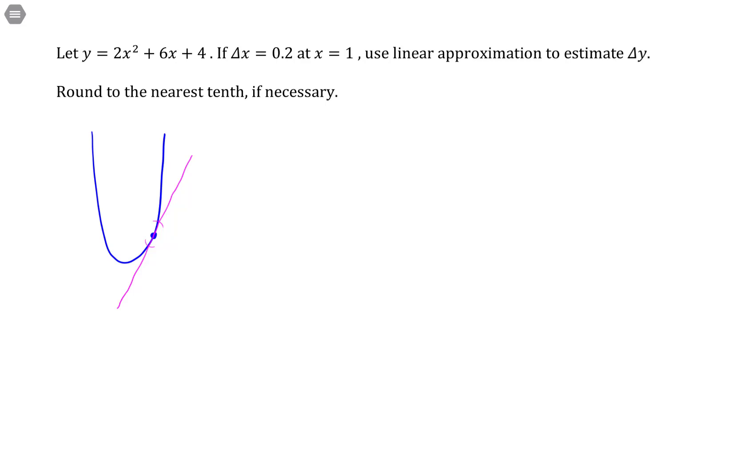So we're obviously going to need the tangent line, so let's get the tangent line. And like I said, I'm not using formulas here, I'm just using the basics of how to find a tangent line. So we have the function y equals 2x squared plus 6x plus 4. Its derivative is 4x plus 6.